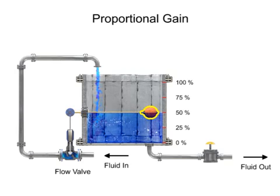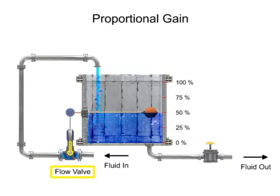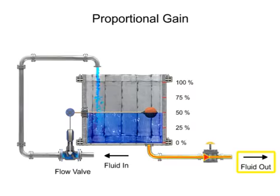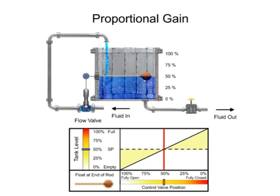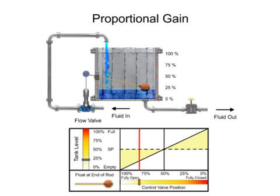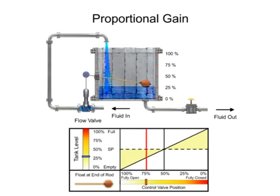The float mechanism is designed so that when the tank level is half-full, the flow valve is open to the position that causes the amount of fluid entering the tank to equal the amount leaving the tank. The float on the end of the rod is positioned to meet the minimum and maximum flow capability of the valve. The valve is actuated by the float to a fully open position when the tank level is low, and fully closed when the tank level is full.